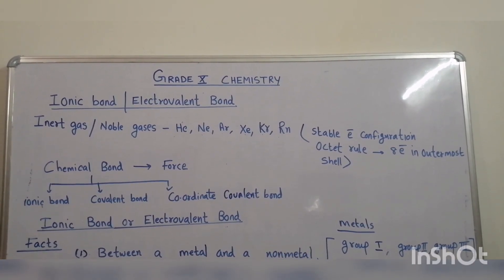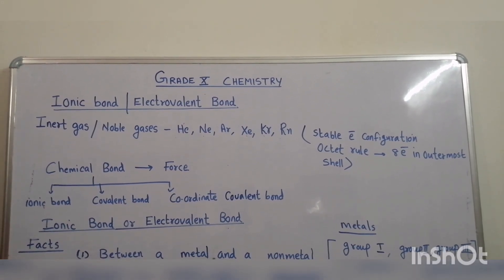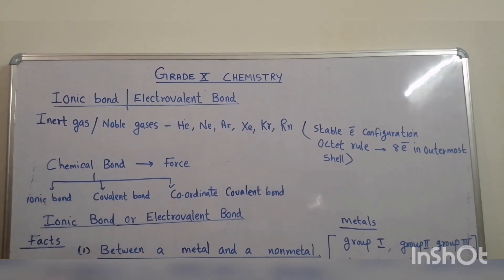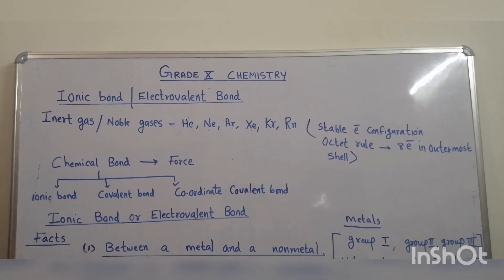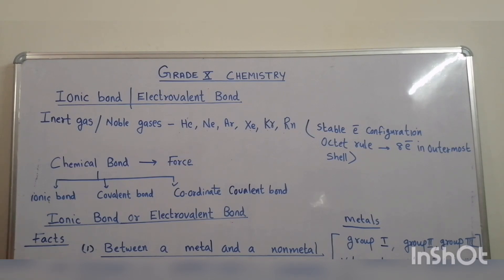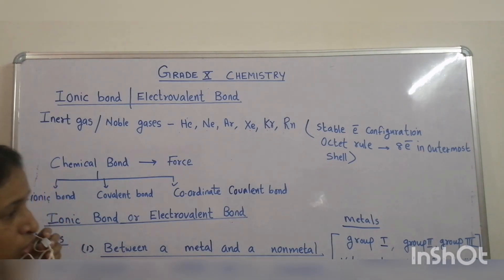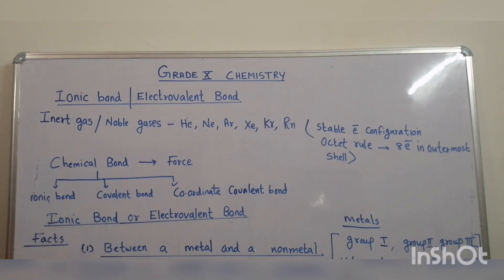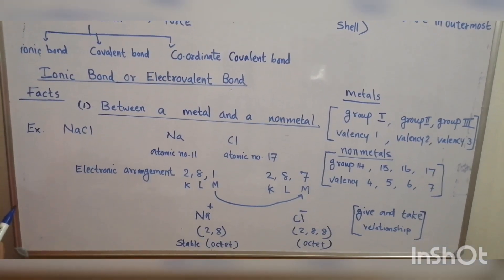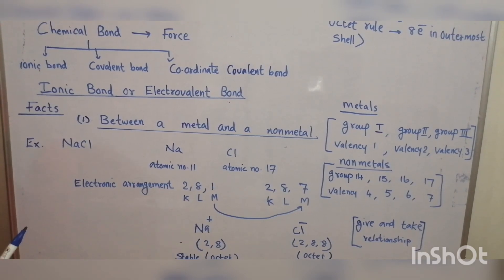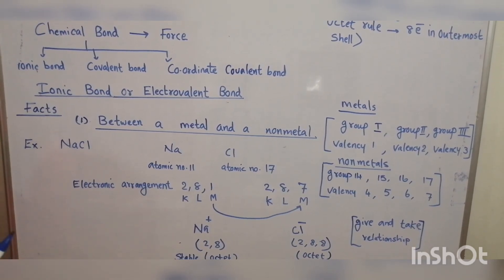An ionic bond is formed between a metal and a non-metal. Group 1, group 2 and group 3 elements are metals, having valency 1, 2 and 3 respectively. Group 14, group 15, group 16 and group 17 elements are non-metals, having valencies 4, 5, 6 and 7 respectively.